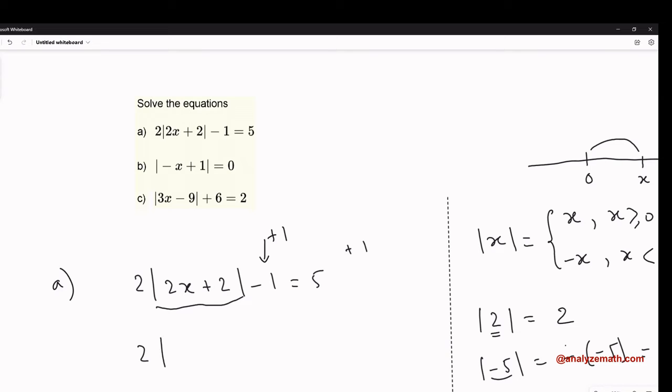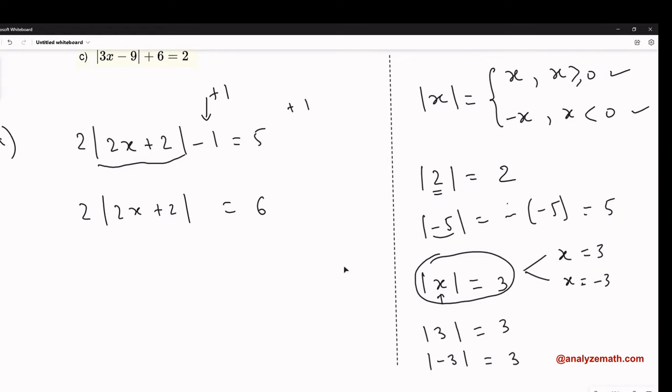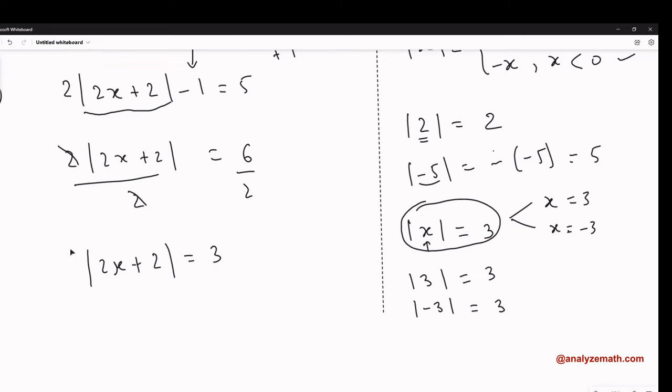This becomes 2|2x + 2| equals 6. Divide both sides by 2, which gives us |2x + 2| = 3. Now we solve this.